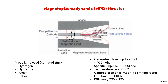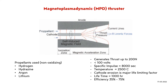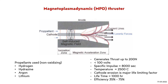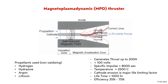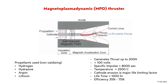Also, ground testing is very difficult. One of the few test centers with vacuum facilities available for a continuous operation of MPD Thrusters is the Institute of Space Systems at the University of Stuttgart in Germany. Many other research institutes use MPD Thrusters in a pulsed operation with a large capacitor bank.